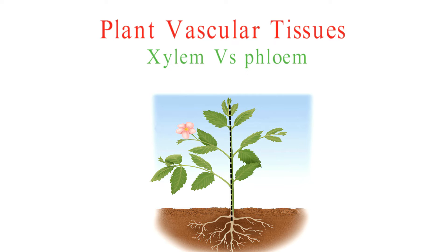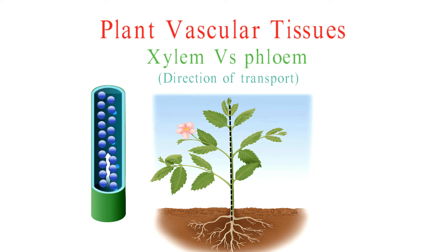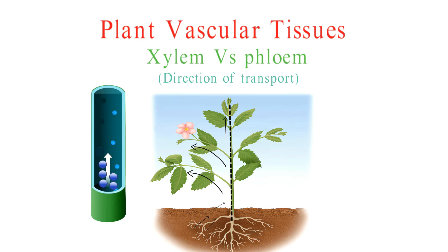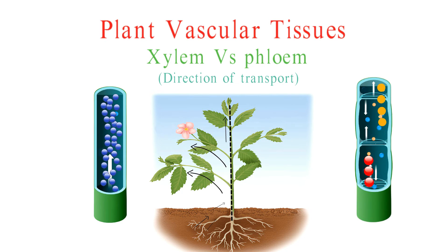Another significant difference is the direction of transport. Xylem primarily transports water and minerals upward, from the roots to the leaves — so it's a one-way flow — while phloem transports organic compounds in both directions, up and down the plant.